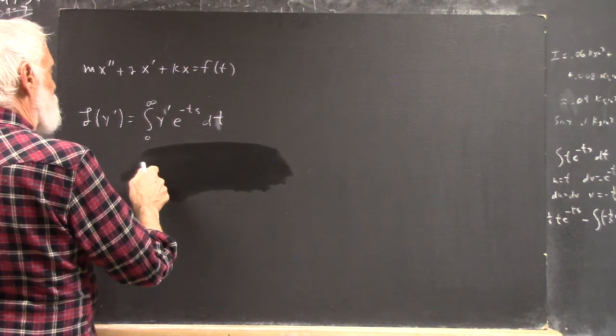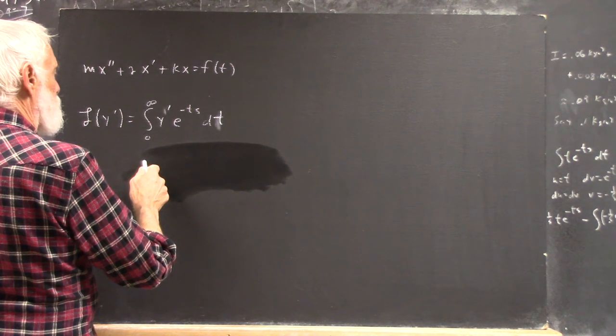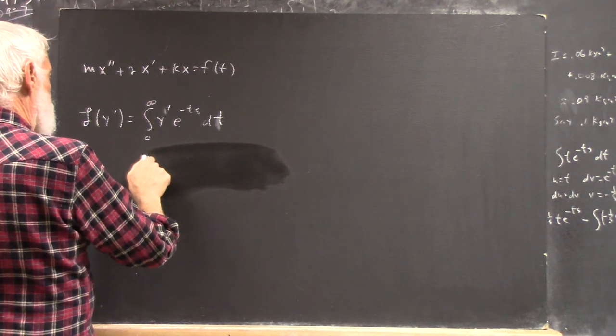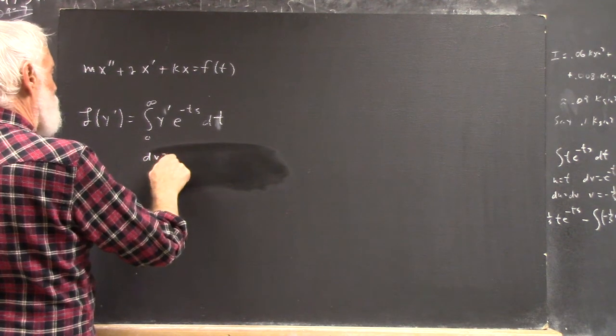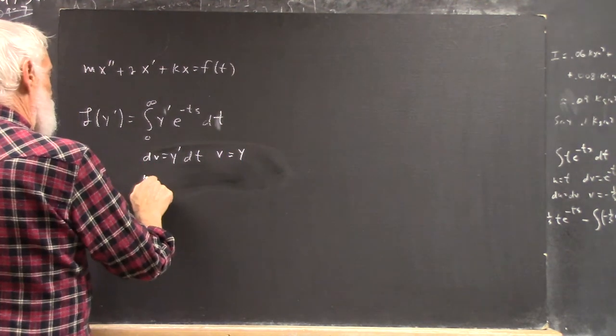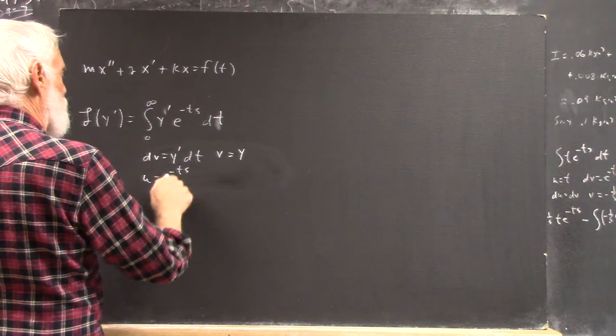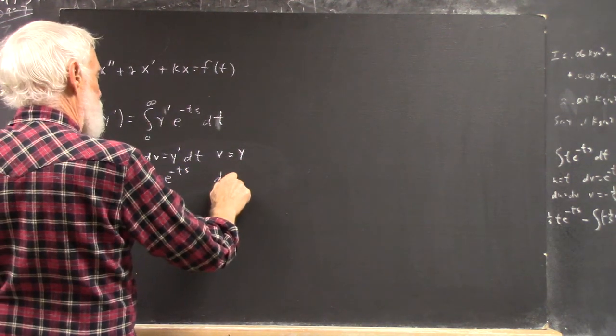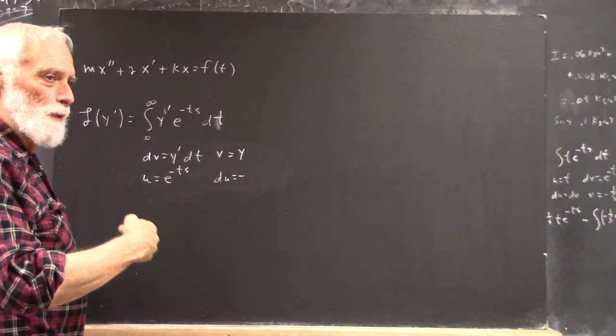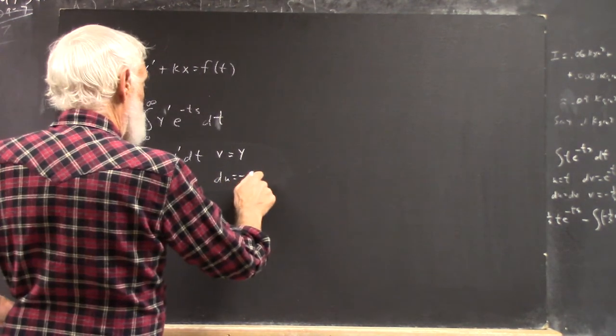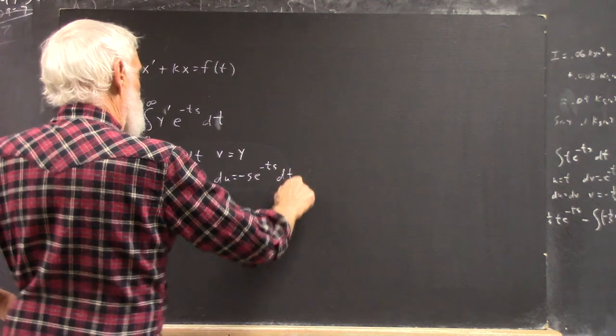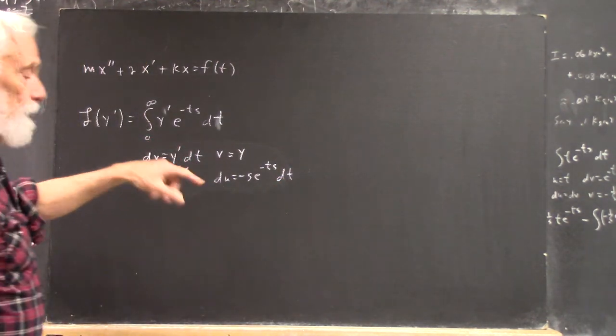So actually, I think I did that right. And dv equals y prime dt, so that v equals y. There's something in that that was giving me a factor that I didn't like, so I thought I did something wrong. So as usual, my mistake was that I thought I'd made a mistake. You get negative s e to the negative st dt when you take your derivative of u, right?